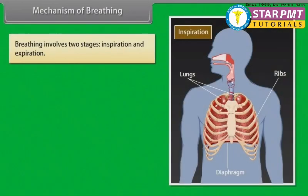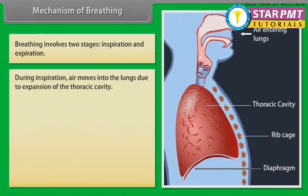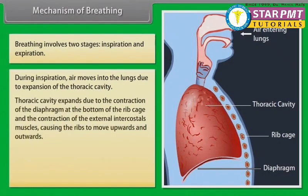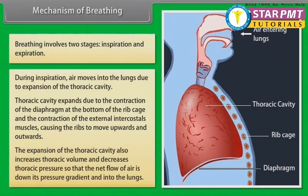Mechanism of breathing. Breathing involves two stages: inspiration and expiration. During inspiration, air moves into the lungs due to expansion of the thoracic cavity. The thoracic cavity expands due to contraction of the diaphragm at the bottom of the rib cage and contraction of the external intercostal muscles, causing the ribs to move upwards and outwards. The expansion of the thoracic cavity also increases thoracic volume and decreases thoracic pressure, so that the net flow of air is down its pressure gradient and into the lungs.